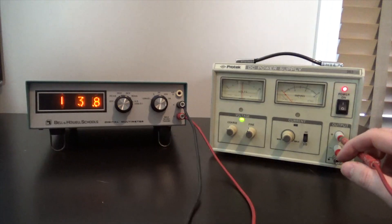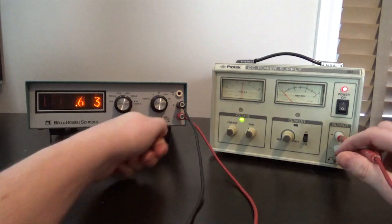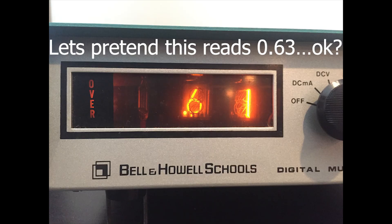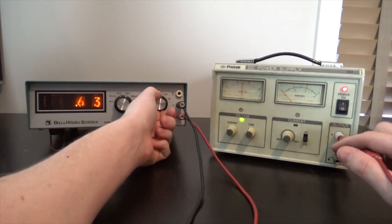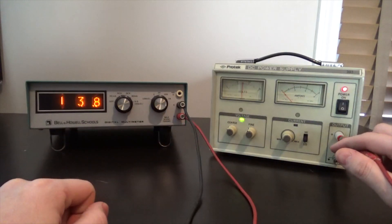An interesting thing about this one is if we change our range, you see we have an over light. That tells you that you need to change your scale. And then the one will come in showing 13.8.